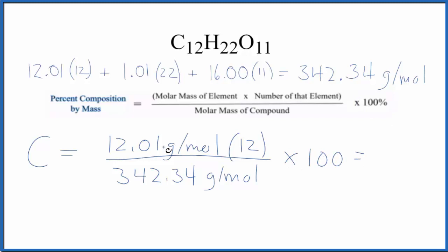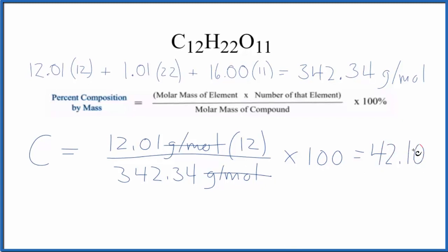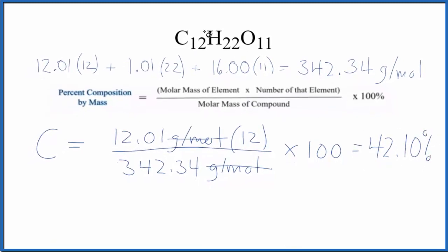And you'll notice grams per mole on the top and the bottom. Those units, they go away. And we end up with 42.10%. So if we had a mass of sucrose here, and we looked at the mass of carbon, 42.10% of the mass of the sucrose, that would be just the carbon atoms.